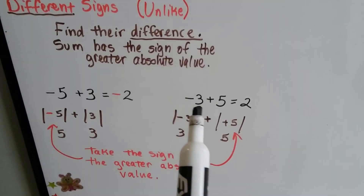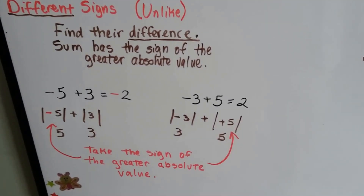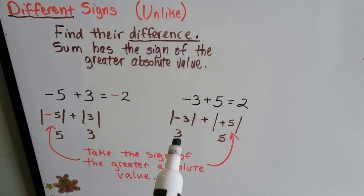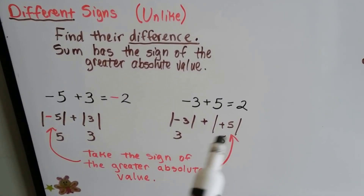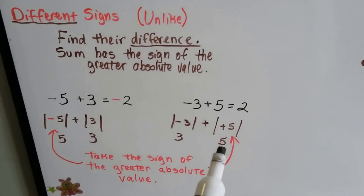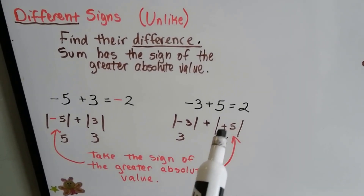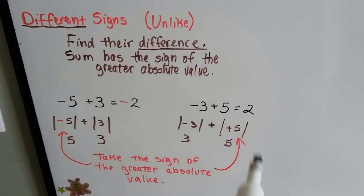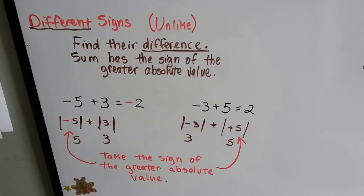For this one, we have a negative 3 plus a 5. We find the difference between 3 and 5. The difference is 2. And this positive 5 has a greater absolute value, so our answer is going to be positive.